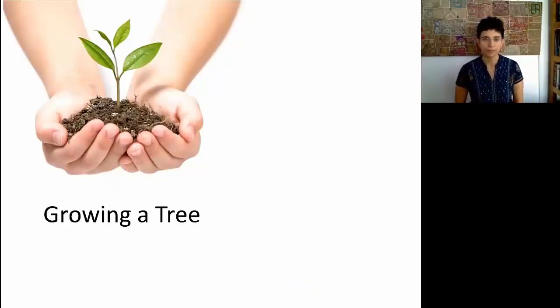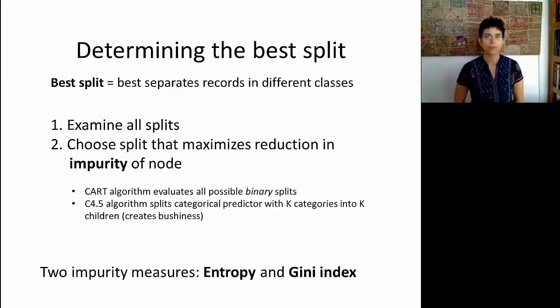Let's look now at how we grow a tree. In order to start a tree, we're going to have to choose which predictor to split on and on what value to split. In order to determine that, we're going to have to define what is a best split. So a best split is going to take a group of records and break them down into two subgroups so that we have hopefully more of a majority of one class in the resulting children nodes.